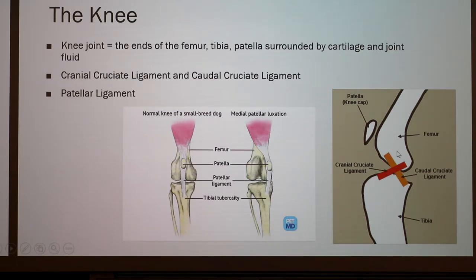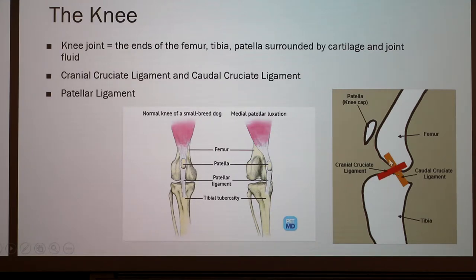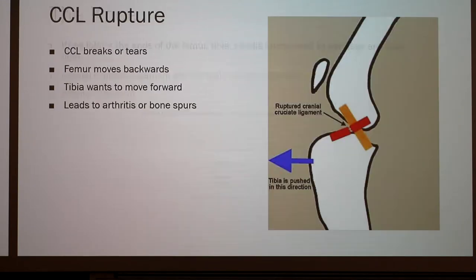Cranial means towards the head of the body, or in front — that's how you know the cranial cruciate ligament is in front of the caudal cruciate ligament — whereas caudal means behind.